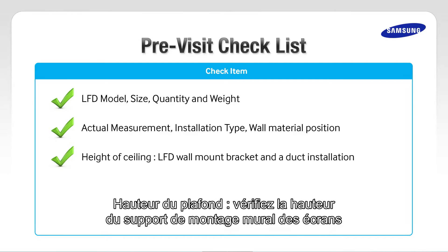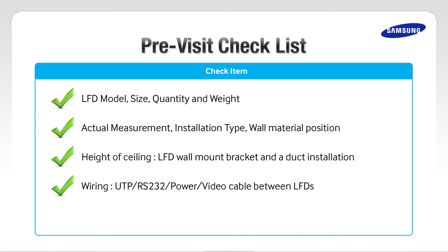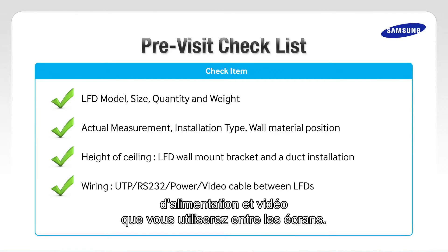Check the height of the ceiling and the height of the LFD wall mount bracket, and install a duct inside or outside. Check the wiring and UTP, RS-232, power, and video cable that you will be using between LFDs.